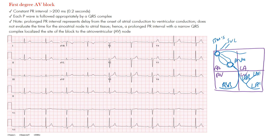When we talk about conduction delays, we're focusing on the AV node, where there is a partial block at or below it. What's happening is we still always have a P wave that precedes the QRS complex, but at a fixed and prolonged PR interval.